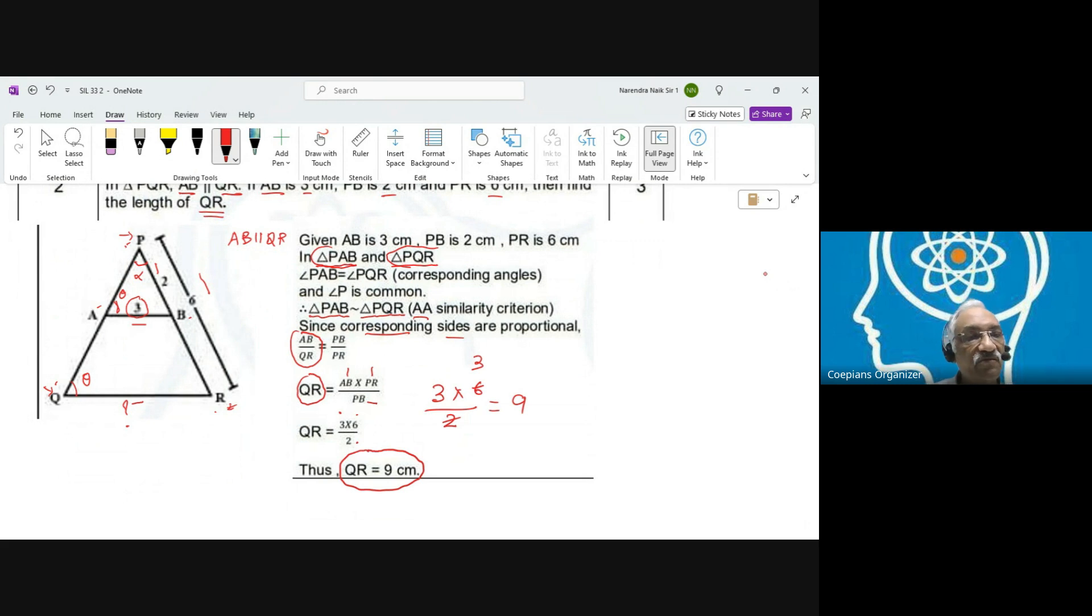So summarizing what we did: we used the AA theorem of similarity and proved that this particular triangle PAB is similar to triangle PQR using AA. What happened is there's a parallelism—corresponding angles theta. The corresponding angles, and angle P is common in these two triangles. Then we used the AA theorem.